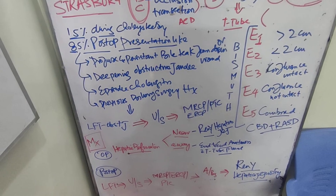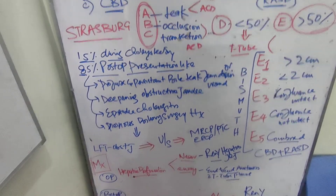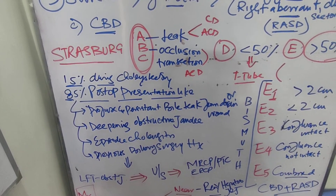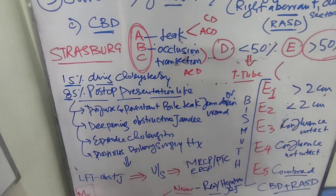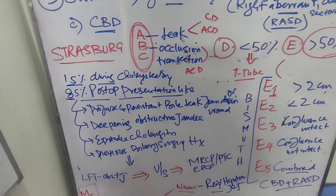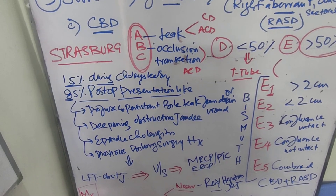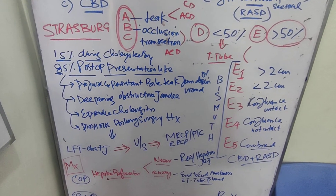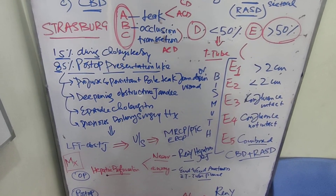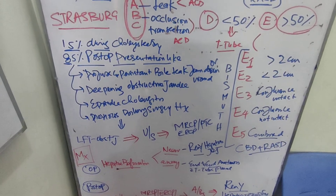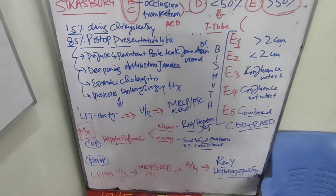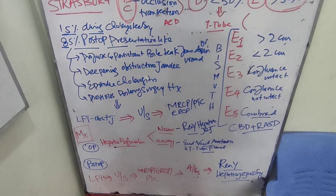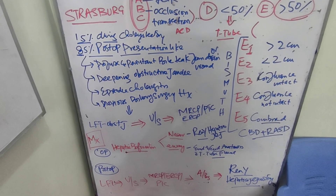Regarding post-operative presentation: it may present as profuse or persistent bile leak from drain or wound, deepening obstructive jaundice, LFTs showing an obstructive picture, episodic cholangitis, or a history of previous biliary surgery. Investigations include LFTs, then ultrasound, then MRCP, ERCP, and PTC to delineate the anatomy. Antibiotic coverage is essential.